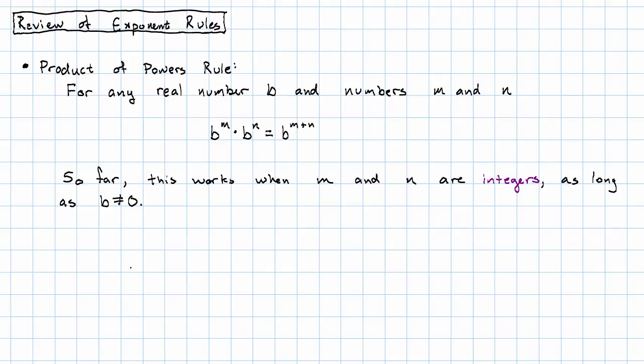In order to make that work for all of the integers, and not just the positive whole numbers, we needed any number to the 0th power is 1, except 0^0 is undefined. And for any b not 0, b^(-m) is the reciprocal of b^m.